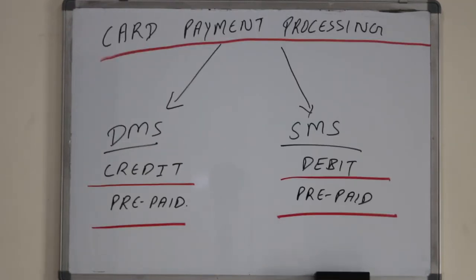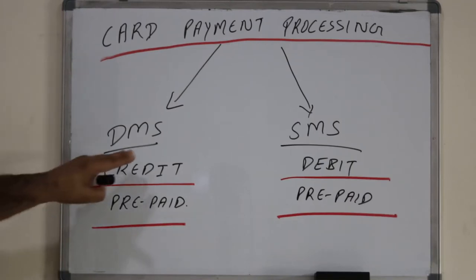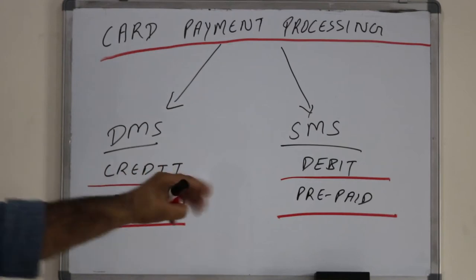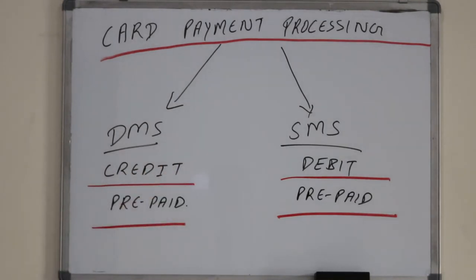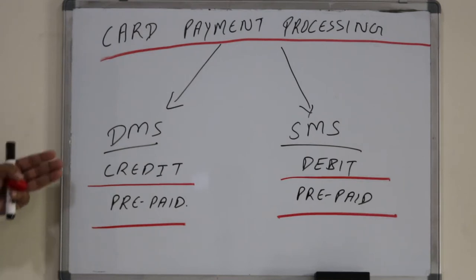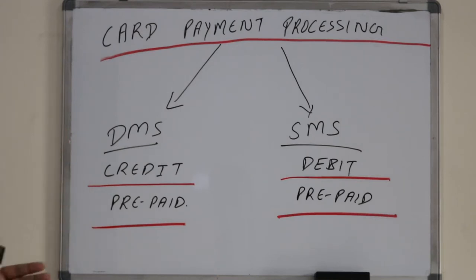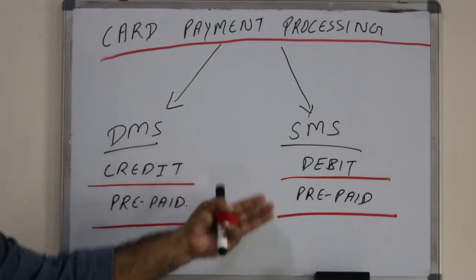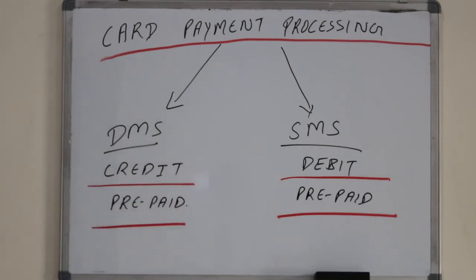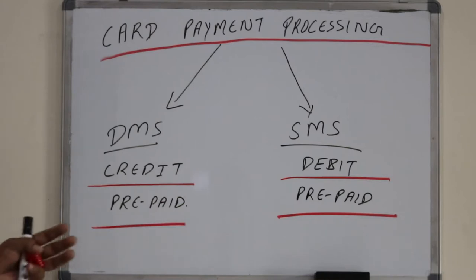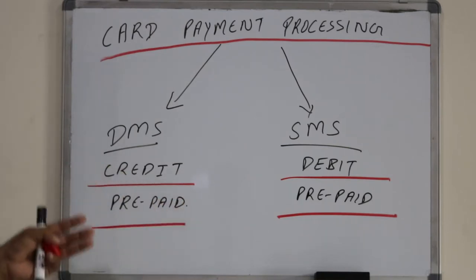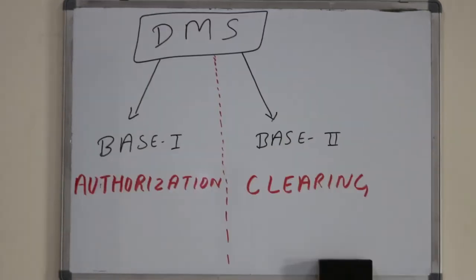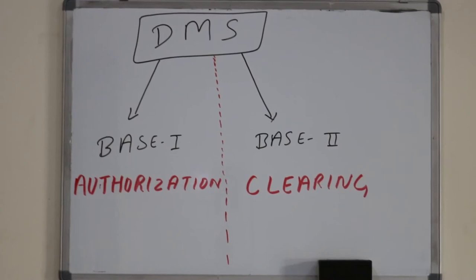There are two different methods of processing a card and payment transaction: one is Dual Message System (DMS) and the other is Single Message System (SMS). Normally credit or prepaid cards can be processed in DMS, and debit or prepaid cards can also be processed in SMS. It all depends on the scheme and how they support different types of cards — credit, debit, or prepaid.